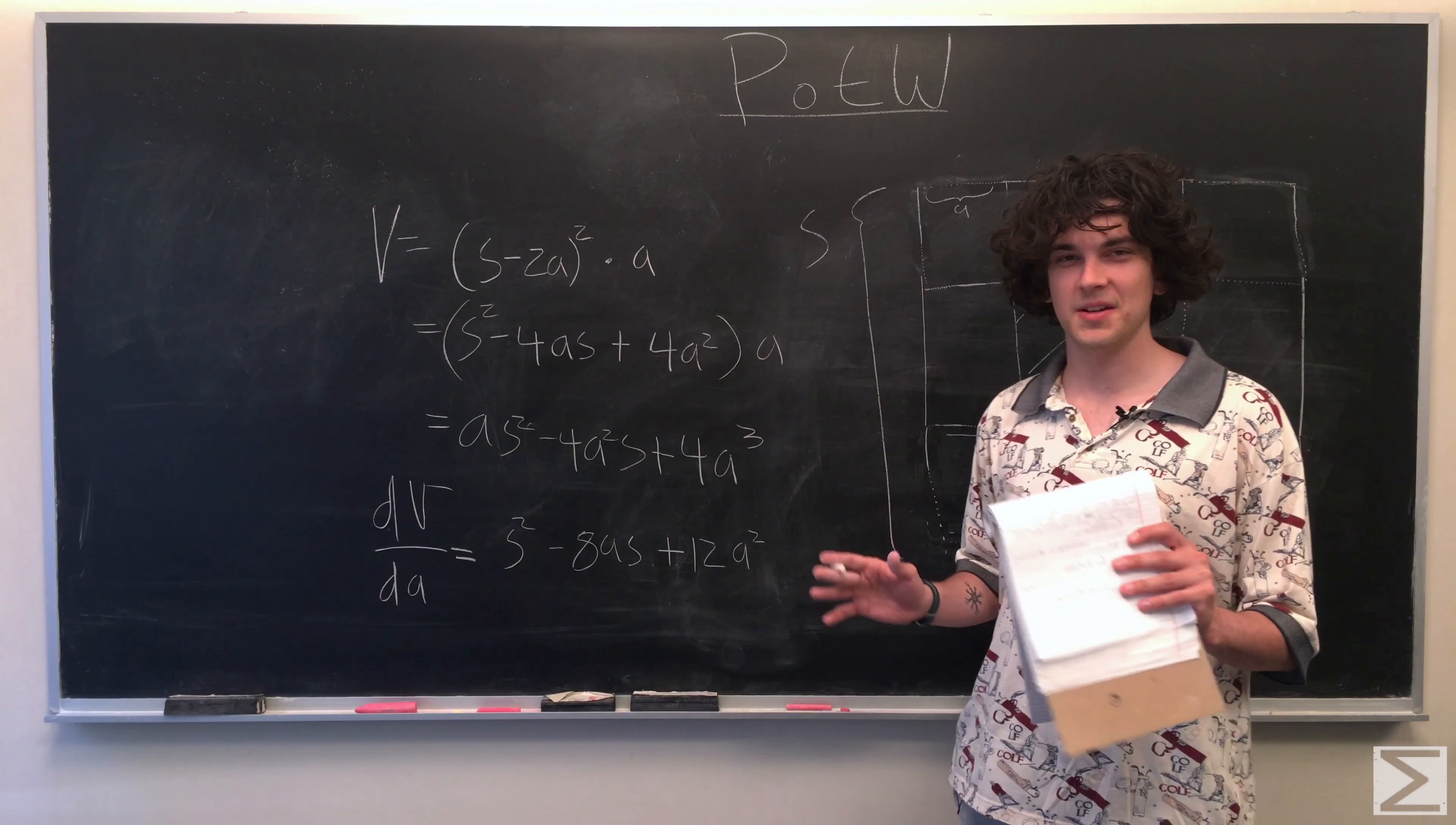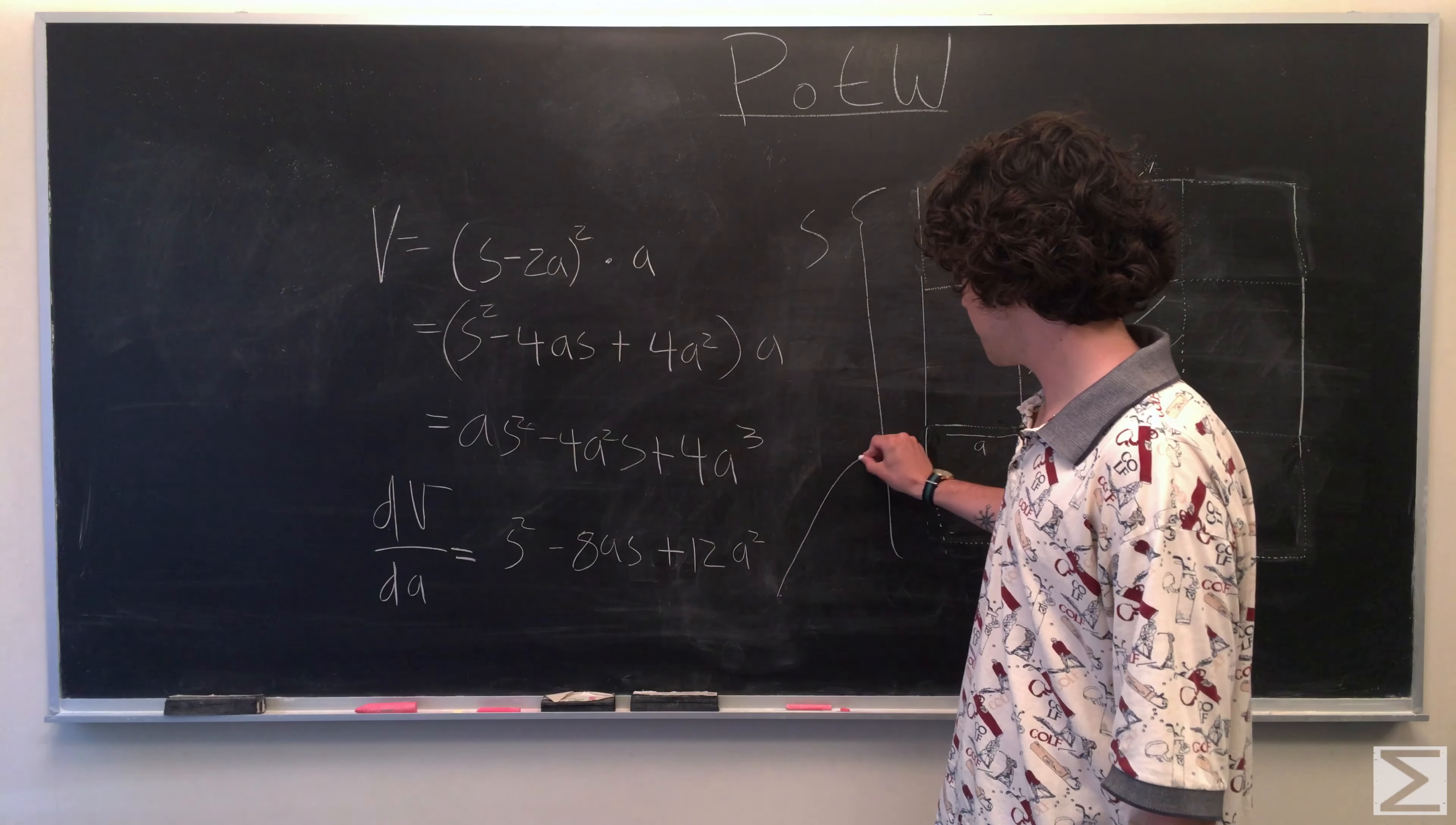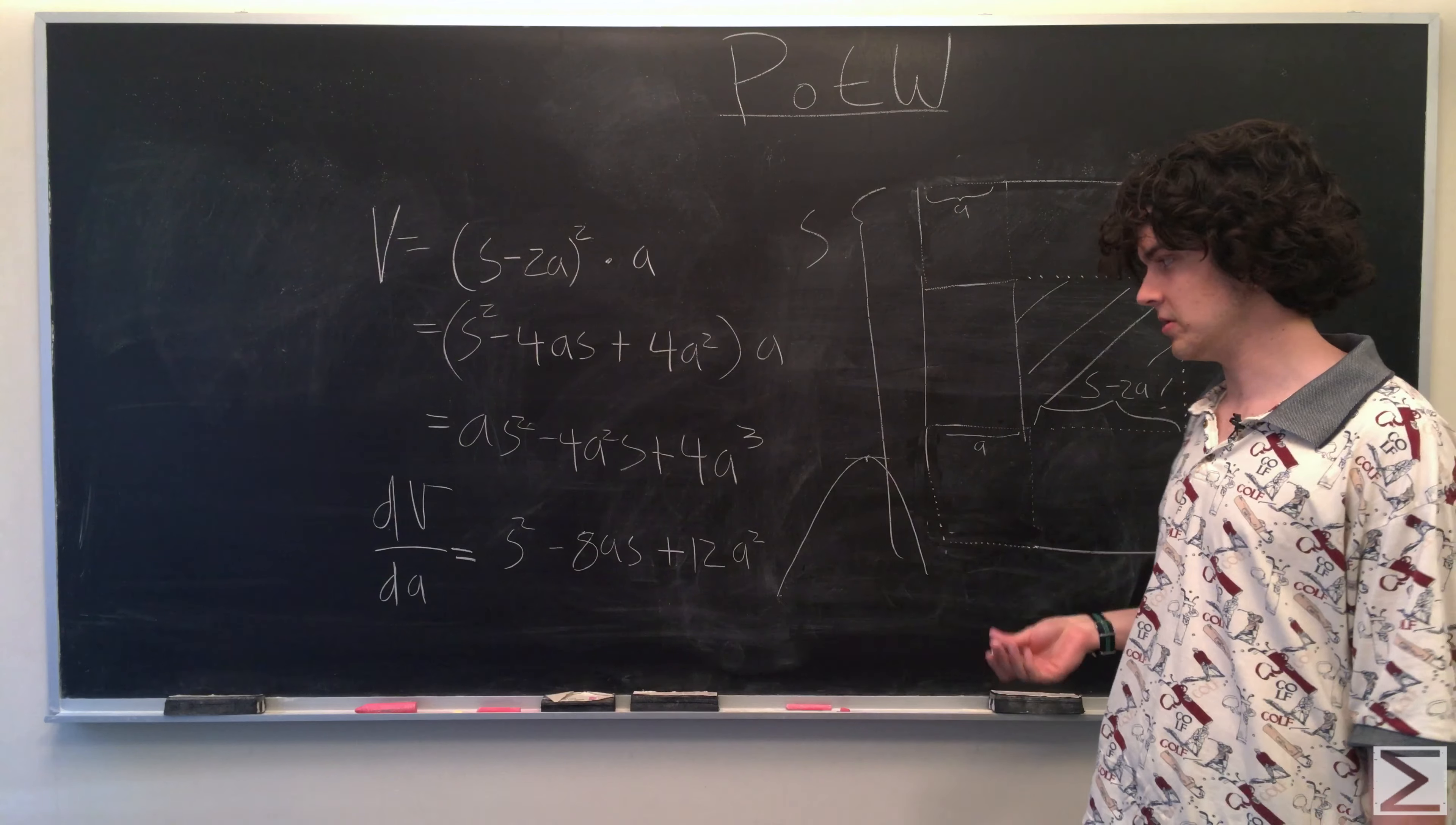So ignore the sounds of construction going on outside of our office right now. But we now have the rate of change of the volume according to what A you have. So if you haven't taken calculus 1, then you won't know this. But we're looking for when this is equal to 0 because when it's equal to 0, we'll have an increasing rate of change and then a decreasing rate of change. And that maximum point is going to be where that's equal to 0.